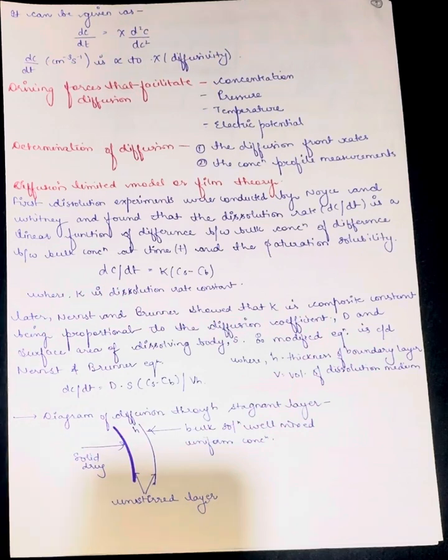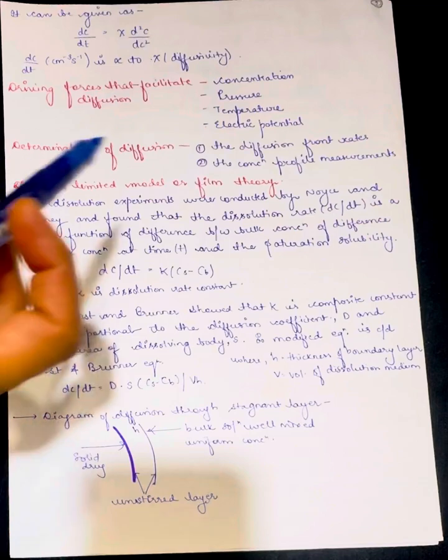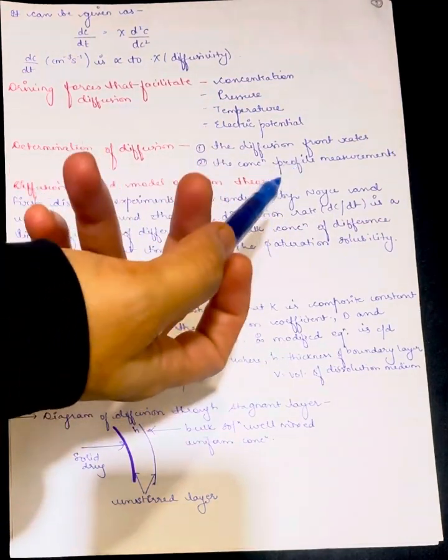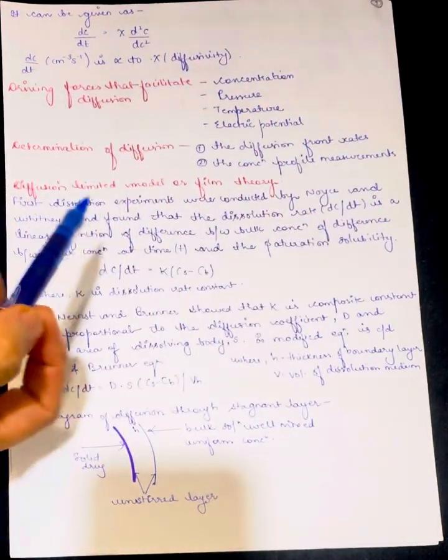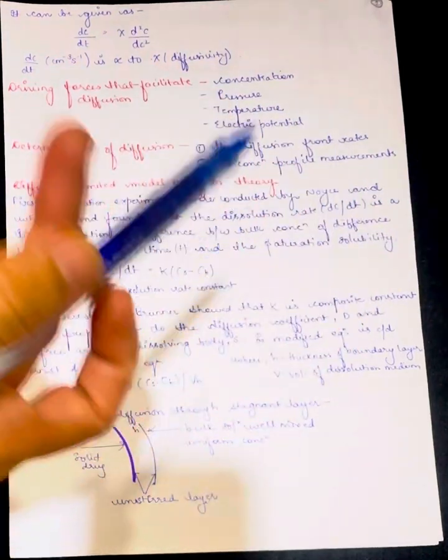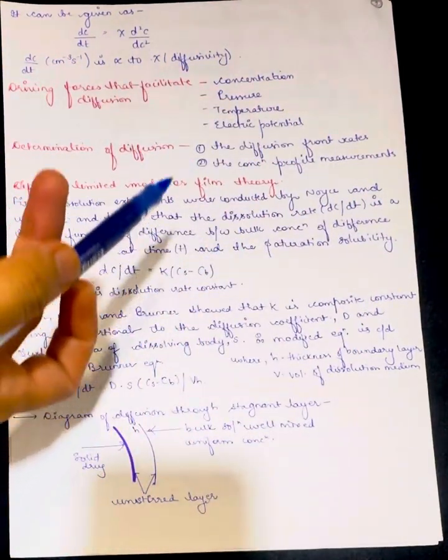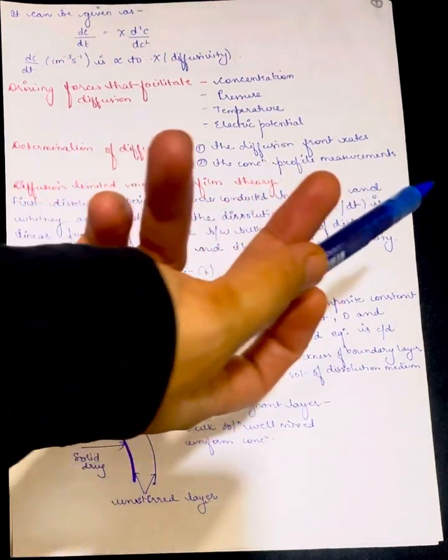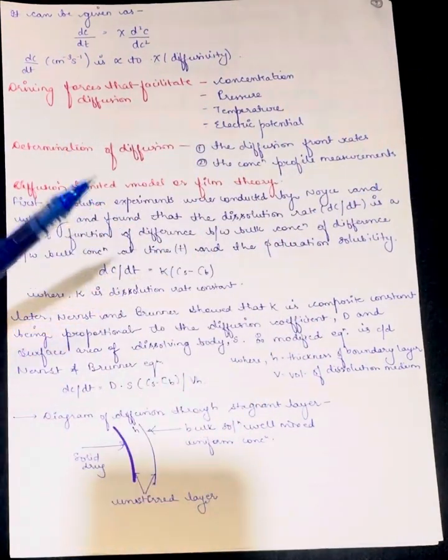Determination of diffusion: first is the diffusion front rate and the concentration profile measurements. Diffusion limited model of film theory - the first diffusion experiments were conducted by Noyes and Whitney, and they found that the dissolution rate (dC/dt) is a linear function of the difference between the bulk concentration.